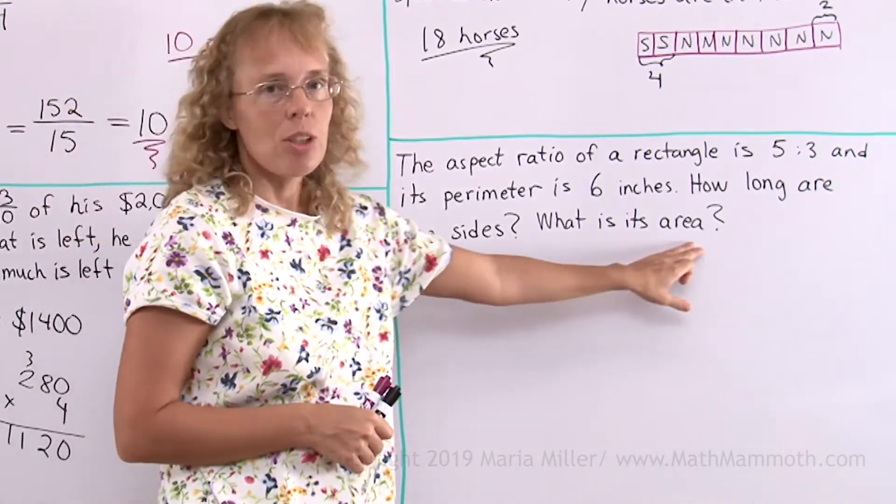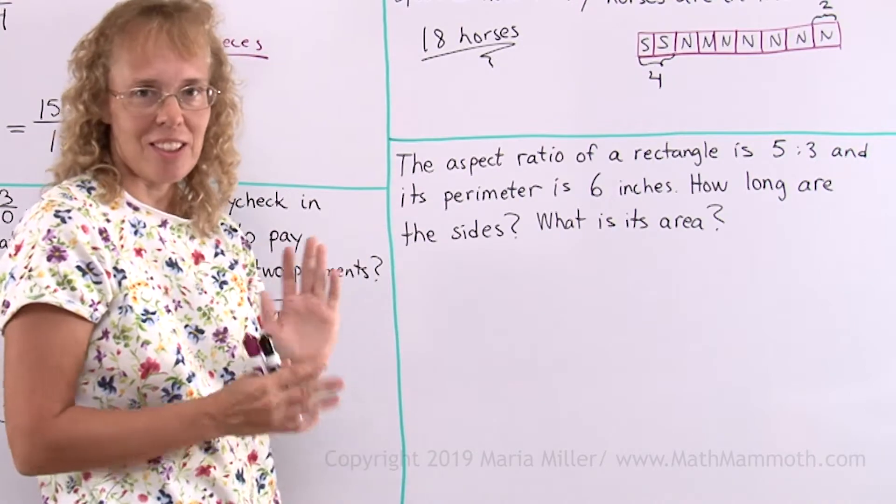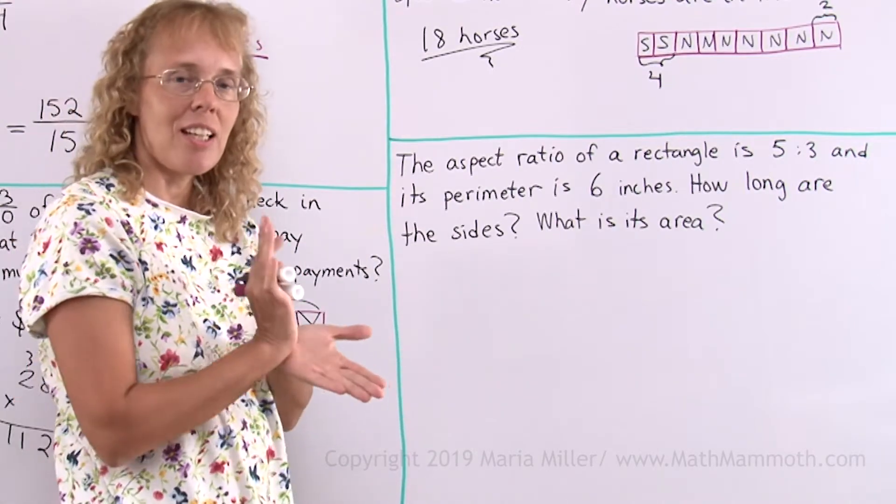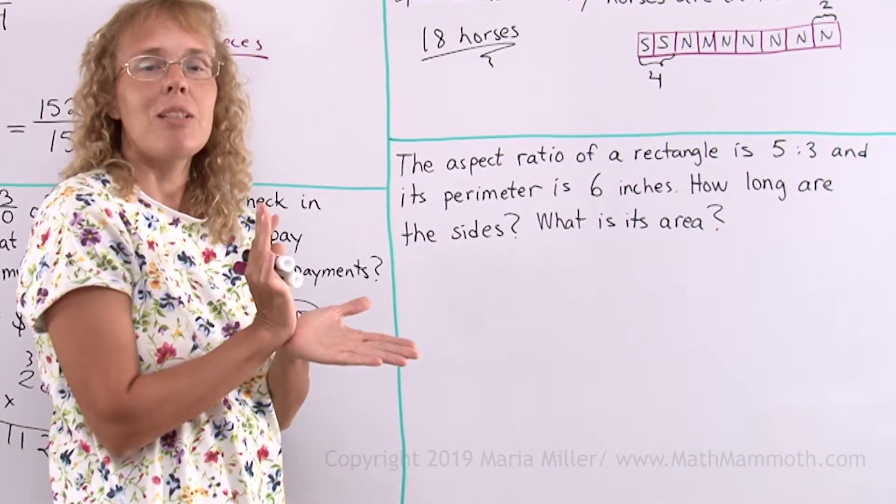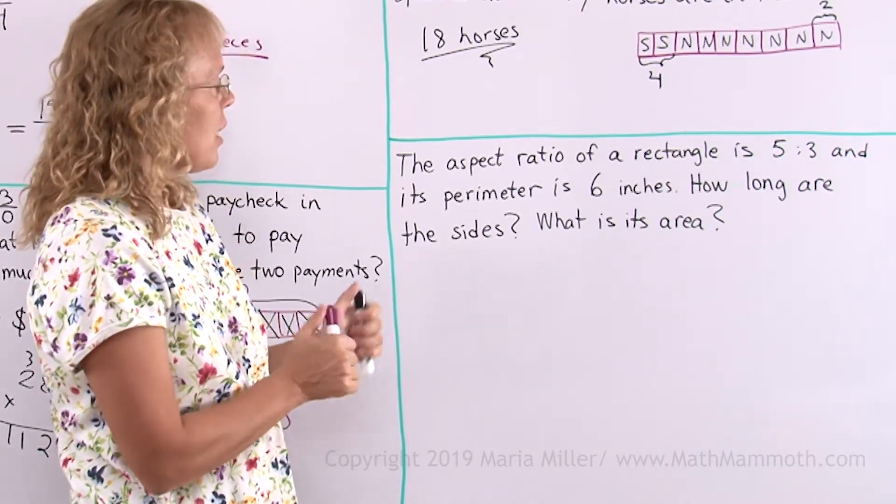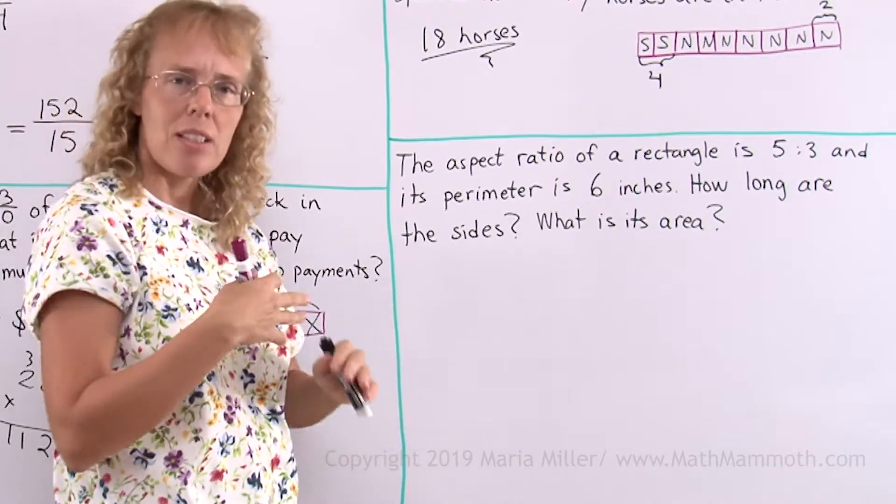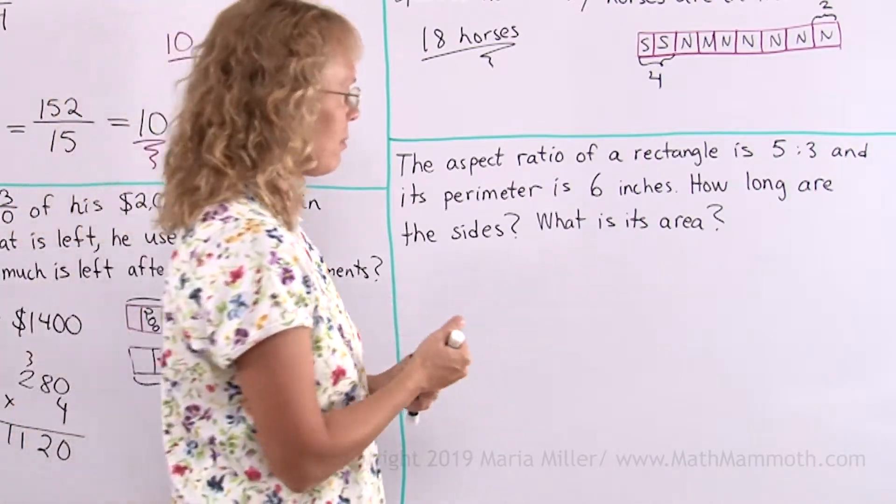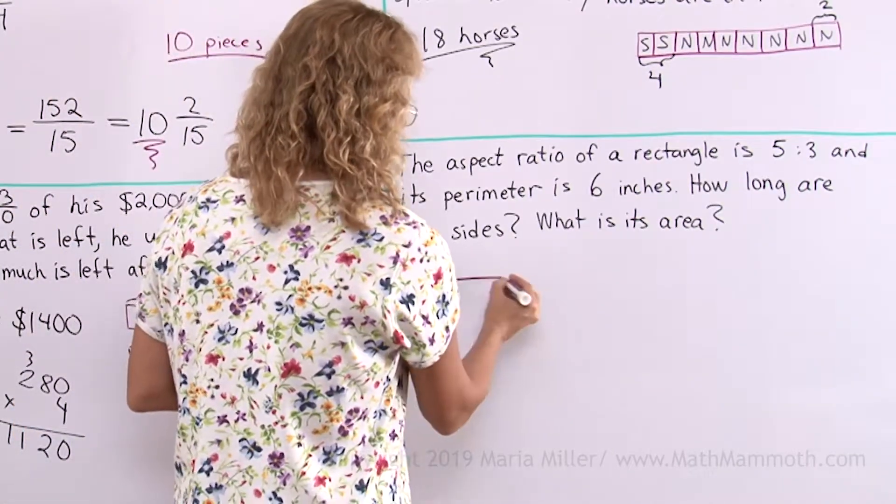Now this last question we can easily solve once we have the side lengths. Once you know the side lengths of a rectangle, all you do is multiply those to get the area. But the side lengths - any time you have this kind of problem with rectangle and perimeter, then draw a rectangle to help you.